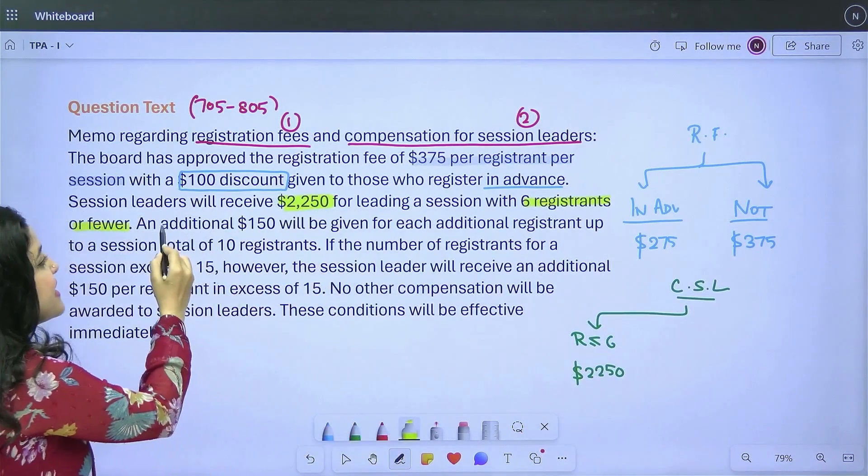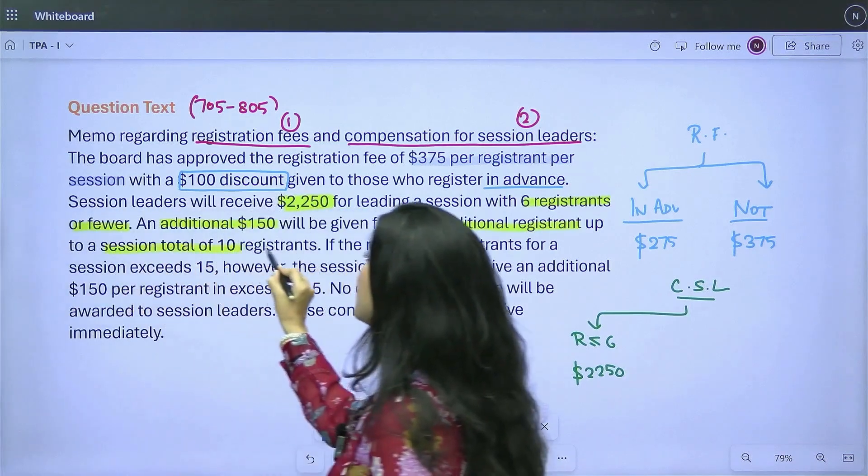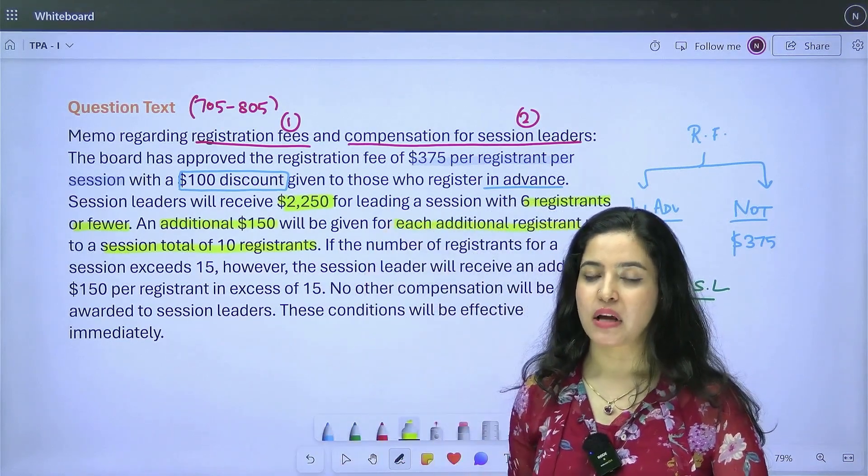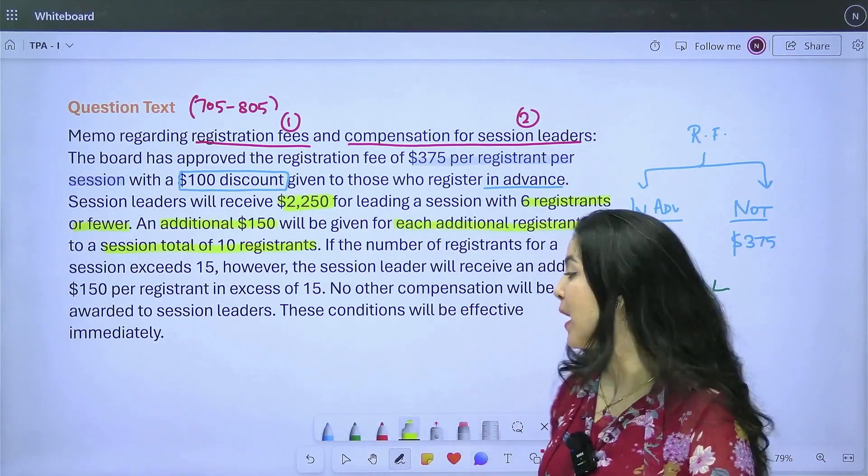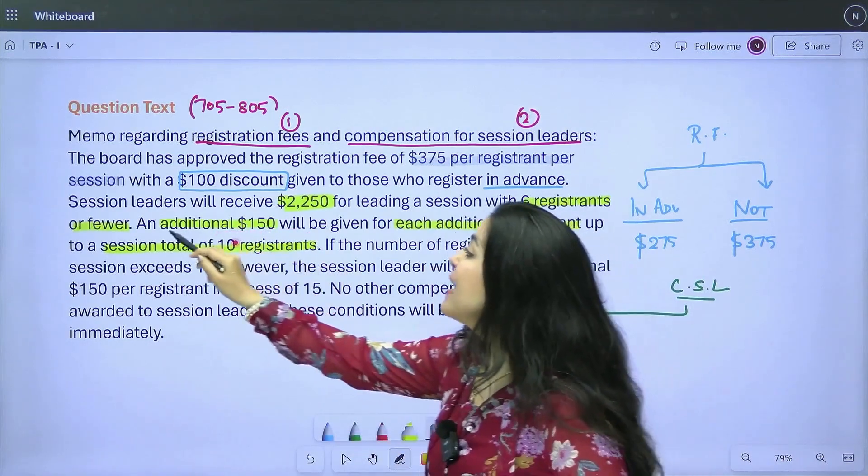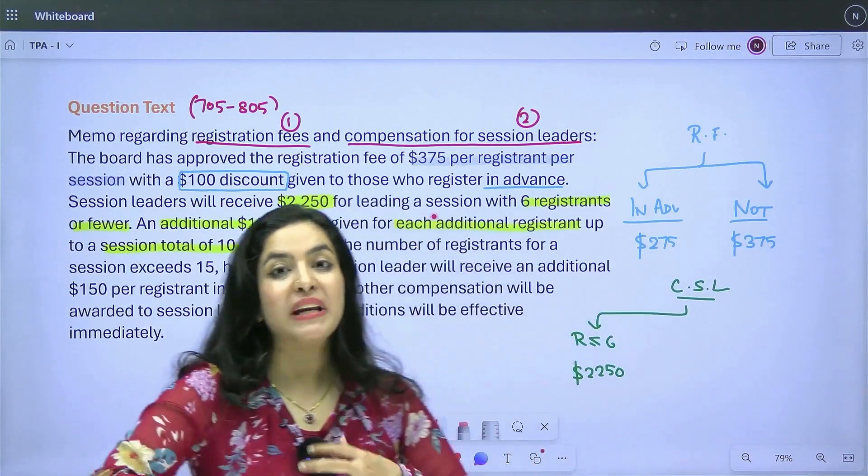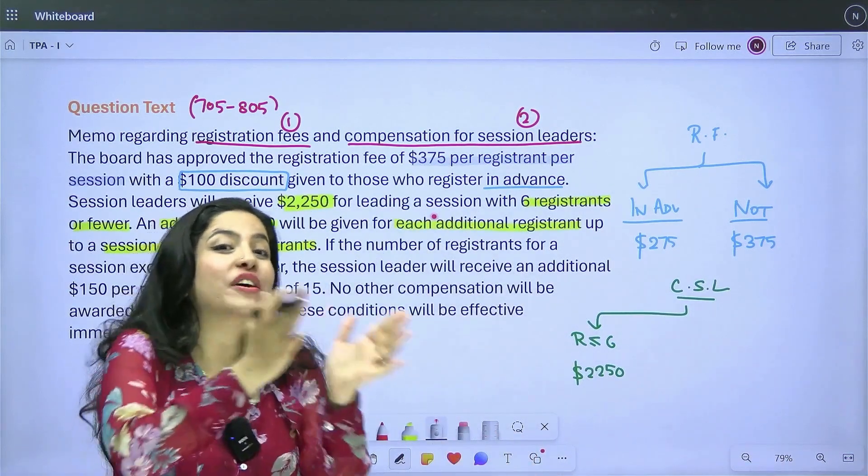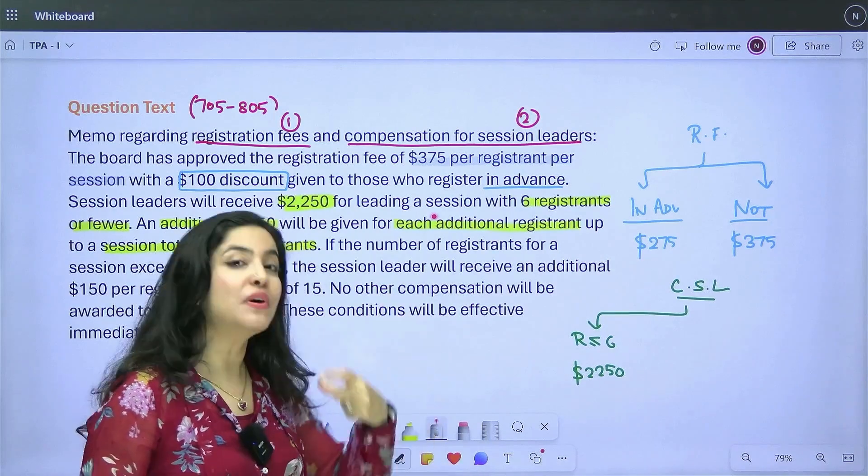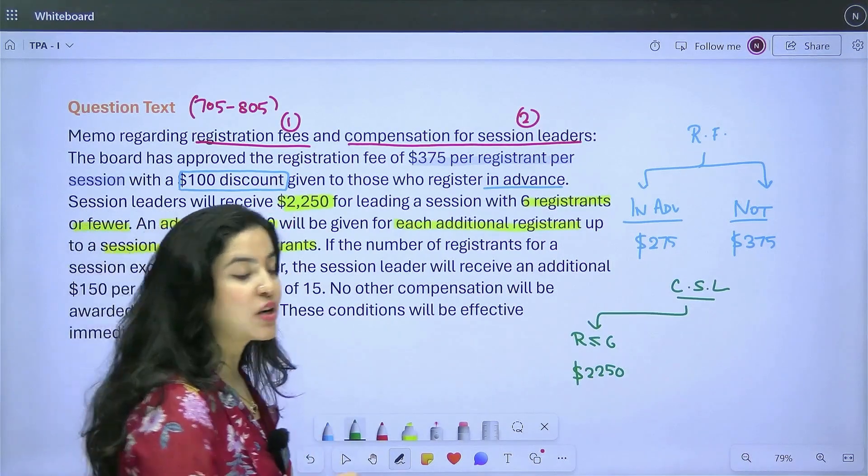Let's read further. Then it says, an additional $150 will be given for each additional registrant. It means that if I have more than six registrants, because six I've already talked about. If I have seven or eight or nine or 10, not 11. Why? Because this next piece is talking only about up to a session total of 10 registrants. In this case, an additional $150 will be given for each additional registrant. So if I have seven registrants, how many additional do I have? One, because I'm seeing it over six. If I have eight, how many additional? Two. If I have nine, three. If I have 10, four. Number that I'm getting in excess of six, that is what I will multiply by this 150 because that's the extra I'm getting.